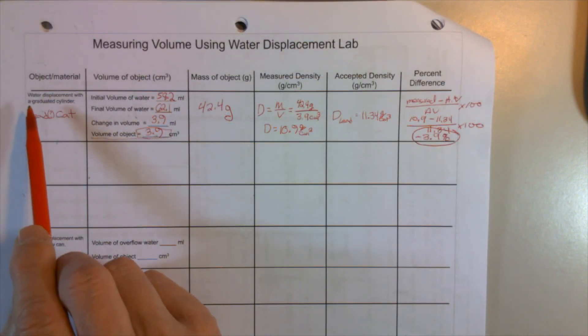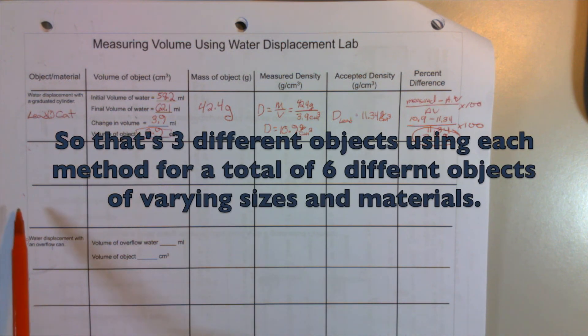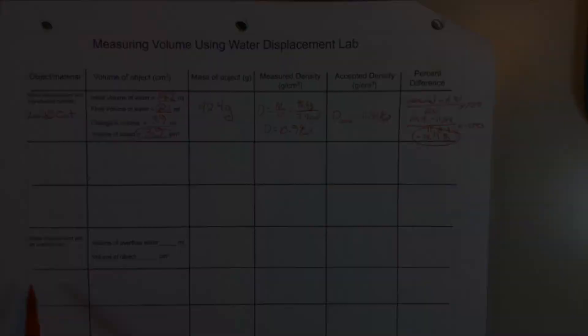I also wrote that I used the graduated cylinder water displacement method to measure the volume of the lead cat. My intention then is for you to use that method three times. Then I measured the volume of the basalt with the overflow can method. My intention is for you to do three of that type of method as well.